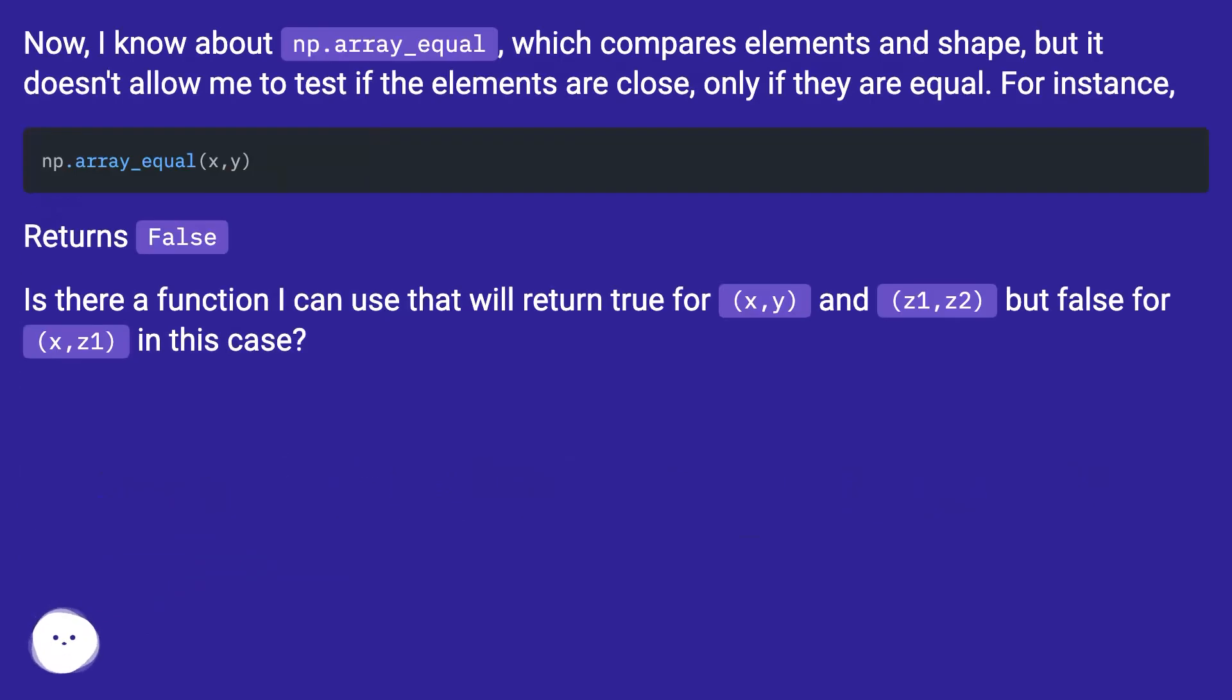Now I know about np.array_equal, which compares elements and shape, but it doesn't allow me to test if the elements are close, only if they are equal.